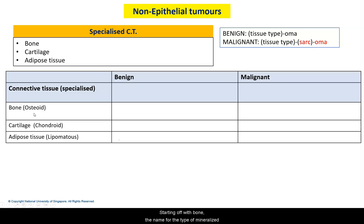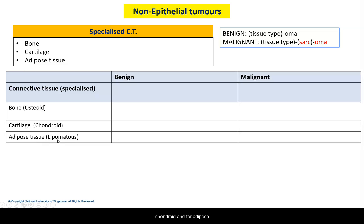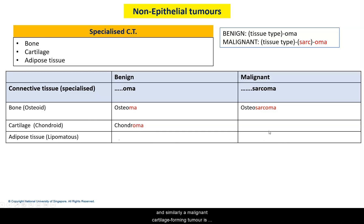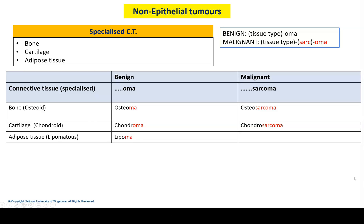Moving on to specialised connective tissue — benign tumours end in -oma, malignant ones in -sarcoma. Starting with bone, the mineralised tissue is called osteoid: a benign tumour is an osteoma, and a malignant bone-forming tumour is osteosarcoma. For cartilage, the matrix tissue is called chondroid: a benign cartilage-forming tumour is a chondroma, and a malignant one is chondrosarcoma. For adipose tissue, benign fatty tumours — which are very common — are called lipomas, and malignant ones are called liposarcoma.